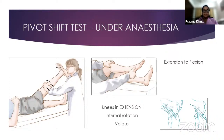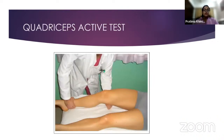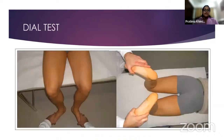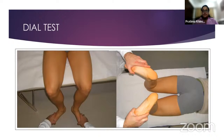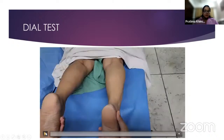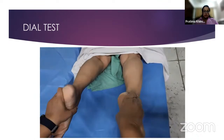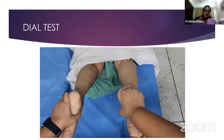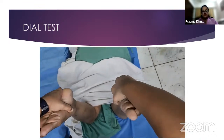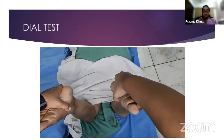Other tests for the PCL include the quadriceps active test, where you ask the patient to actively contract the quadriceps and the posterior sag is eliminated. The dial test is important to check for posterolateral injuries — done in a sitting or prone position — checking whether there is more than 10 degrees increase in external rotation compared to the contralateral side at both 30 and 90 degrees. Hold the foot on the sole, not the dorsum. An increase of more than 10 degrees external rotation only at 30 degrees indicates an isolated PLC injury; if present at 90 degrees, there is an associated PCL injury as well.